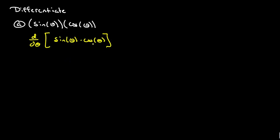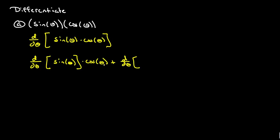We notice here that we have two different functions, so we're going to use the product rule, which says that we take the derivative of one of the functions times the other function, plus the derivative of the function we didn't take times the other function. Derivative of the first times the second, plus the derivative of the second times the first.